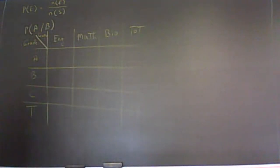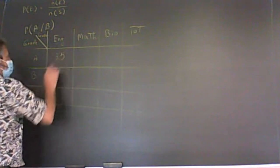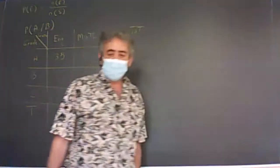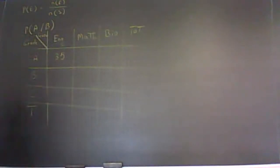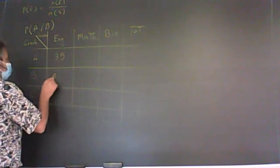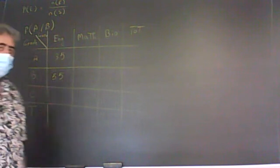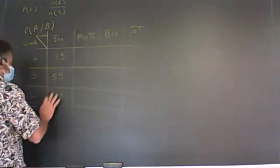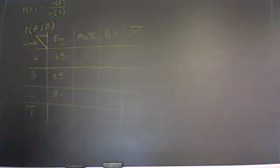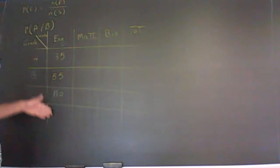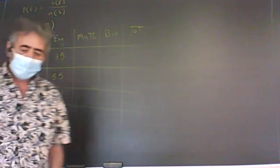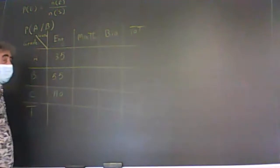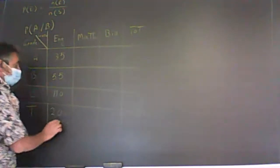In the English class, say 35 students got A's, 55 have B's, and 110 have C's. We're not going to consider F's — nobody got F's. So the total number of students who took this class is 35 plus 55 is 90, plus 110, giving 200 students.